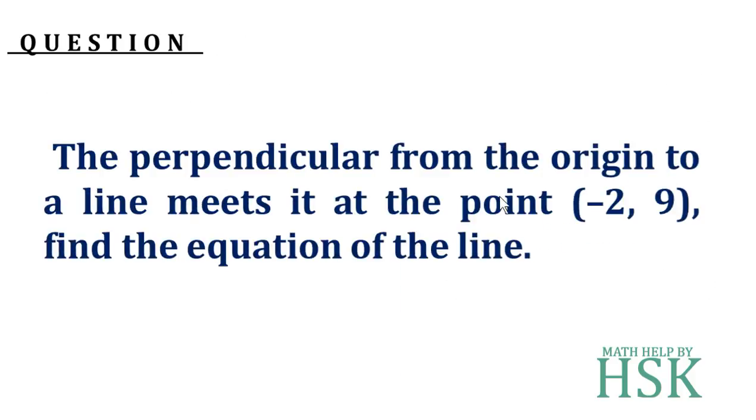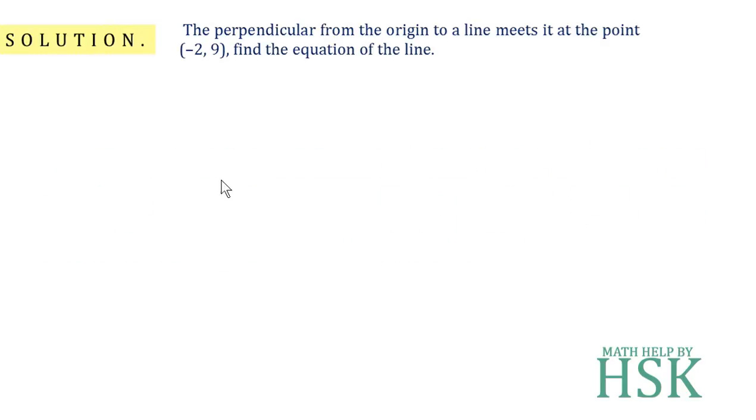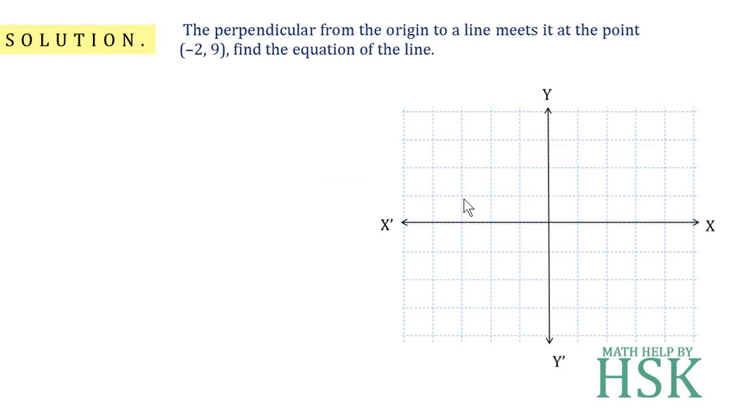The question is: the perpendicular from origin to the line meets it at a point (-2, 9). Find the equation of the line. Now to solve this question, first of all I take this coordinate axis and O